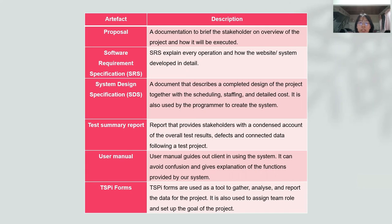Software Requirement Specification (SRS) explains the area of operation and how the website or system is developed in detail. System Design Specification is a document describing the complete design of the project with scheduling, staffing, and detailed costs, also used by programmers to create the system. Test Summary Report provides stakeholders with a condensed account of overall test results, defenses, and connected data following a test process. The user manual guides our client in using the system, avoiding confusion and explaining system functions clearly. TSPI forms are used to gather, analyze and report project data, assign team roles, and set out project goals.